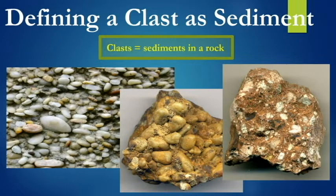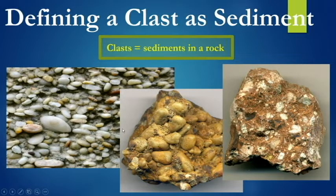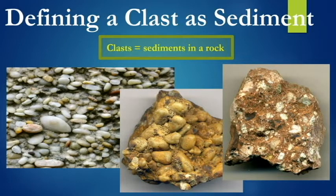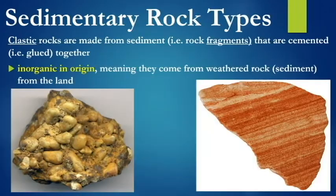Here are just some examples of what a clast is — these are the sediments inside of a rock. We have a conglomerate over here; actually we have two conglomerates. The clasts are very obvious. We have a breccia over here. We have individual grains, individual fragments all glued together. So a clast is sediments in a rock.